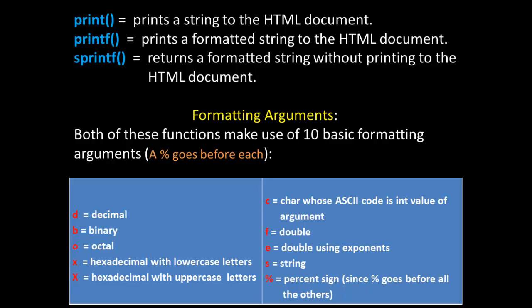The 10 formatting argument types are: d for decimal, b for binary, o for octal, a lowercase x for hexadecimal with lowercase letters, an uppercase X for hexadecimal with uppercase letters, c for a character whose ASCII code is the integer value of the argument, f for double, e for double using exponents, s for string, and the percent sign to indicate a literal percent sign, since just one percent sign would be prefixing the argument.